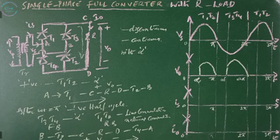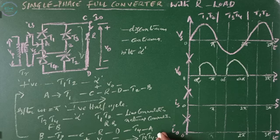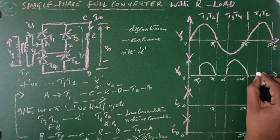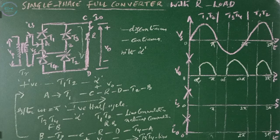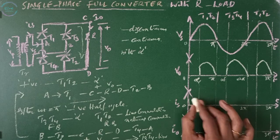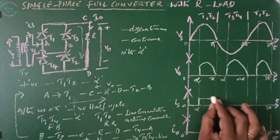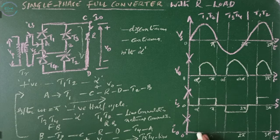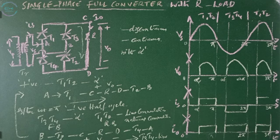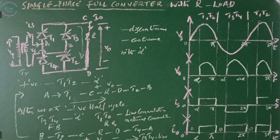At omega-t equals 2-pi, this process repeats. Meanwhile T3 and T4 turn off by natural commutation, and the process starts again as it did at omega-t equals zero. From zero to alpha, the circuit is not conducting (brake mode). The output voltage is present only when the circuit is in operation and the input is present. Since the output is discontinuous, this type of operation is known as discontinuous operation.